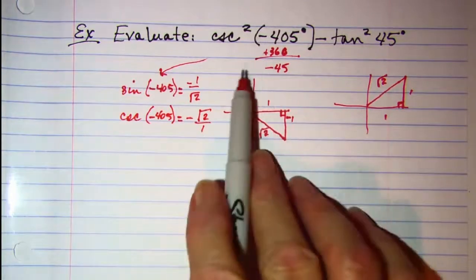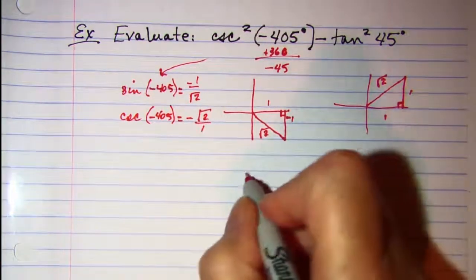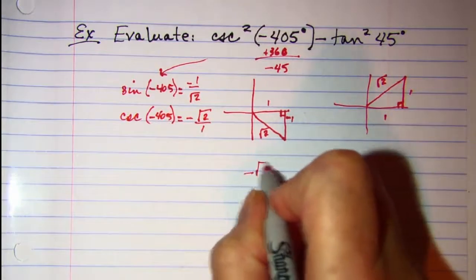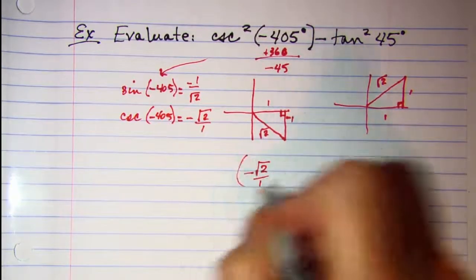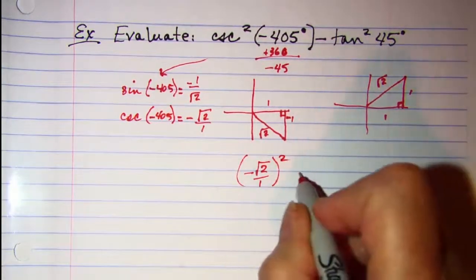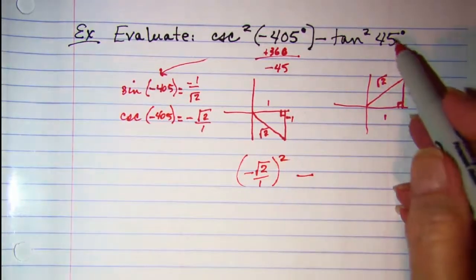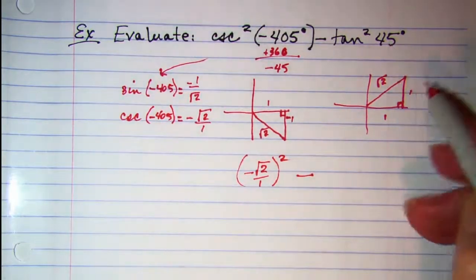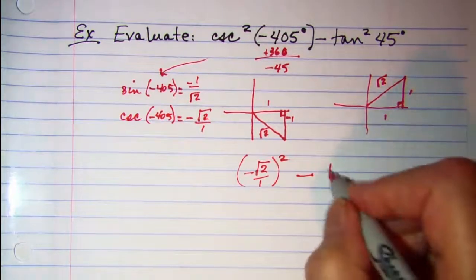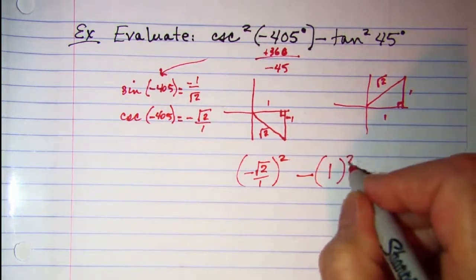And then I need to square that, so negative √2 over 1 squared. Subtract. And then for this one, I want the tangent, which is 1, and then I need to square that as well.